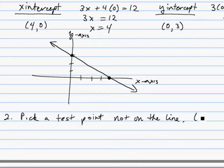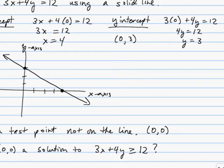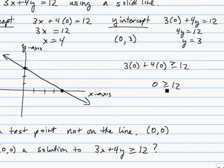The easiest test point is (0, 0), the origin. It's not on our line. If it's a solution to our original inequality 3x plus 4y greater than or equal to 12, then we shade that side. Plugging in x equals 0 and y equals 0: is 0 greater than or equal to 12? No, that's not true. So (0, 0) is not a solution, meaning no point on this side of the line is a solution. Therefore, every point on the other side is.